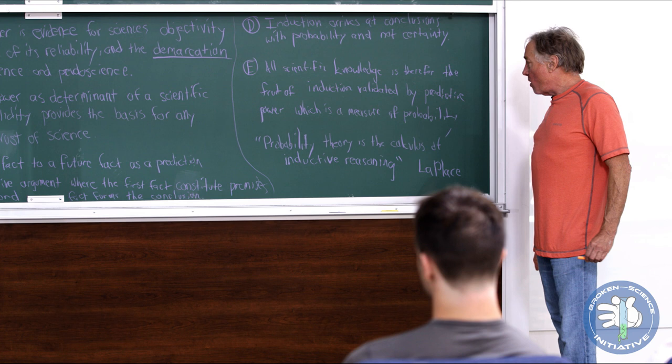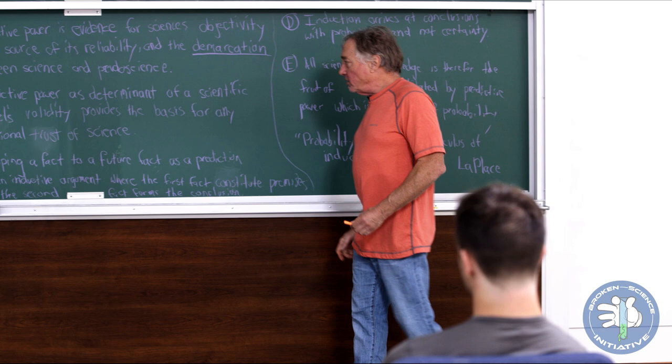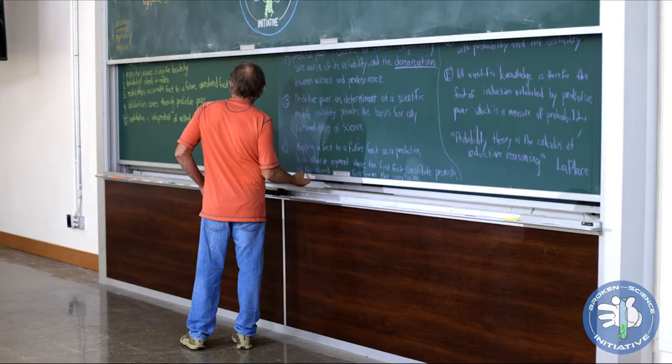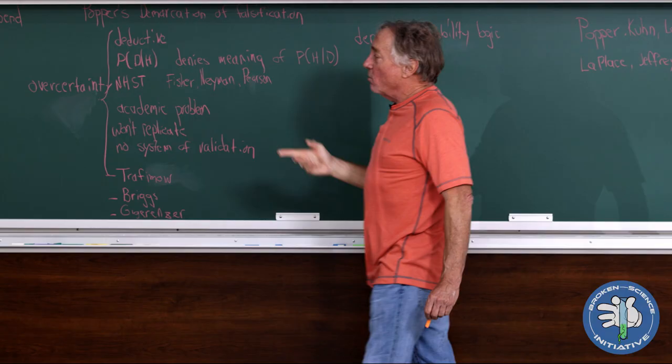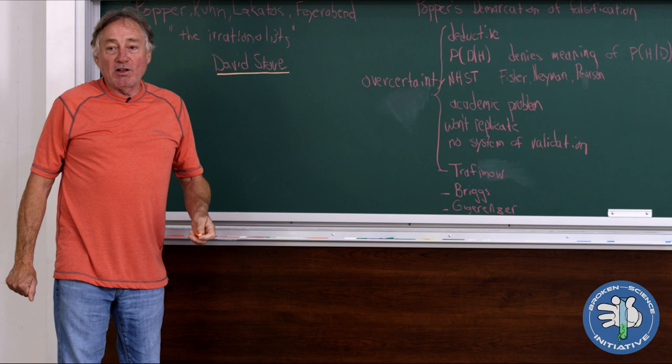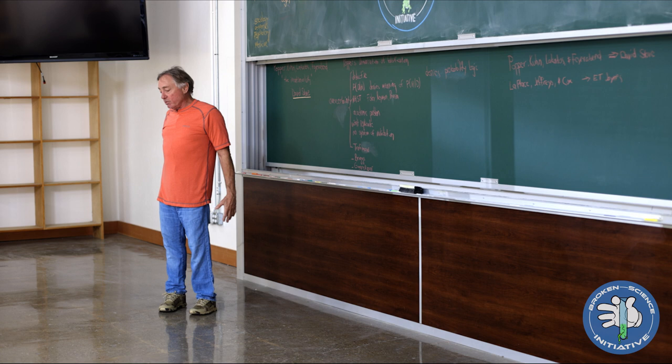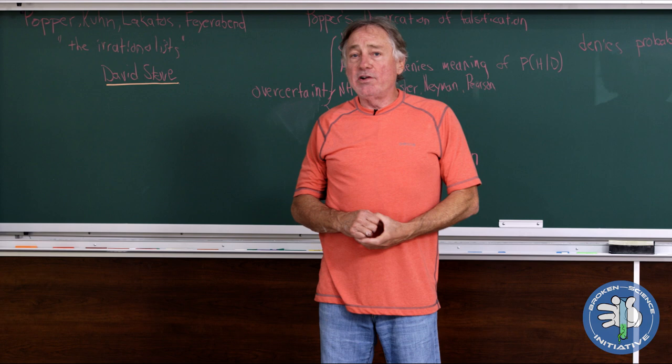I have a quote here from Laplace: probability theory is the calculus of inductive reasoning. The whole thing with the key to all of what we're doing here in modern science has to do with prediction. That is the demarcation. Now what's happened, and we know where and who and when, the mess kind of starts in 1934 with Karl Popper. I don't like to talk about Popper, Kuhn, Lakatos, and Feyerabend without talking about the Australian philosopher David Stove. He dedicated his entire philosophical career to correcting the errors that were made by these guys. And there are many of us that think he did an absolutely amazing job of that. That is very convincing.